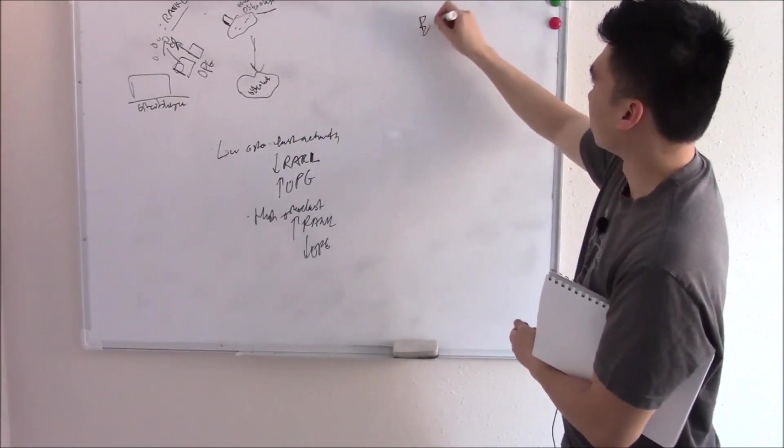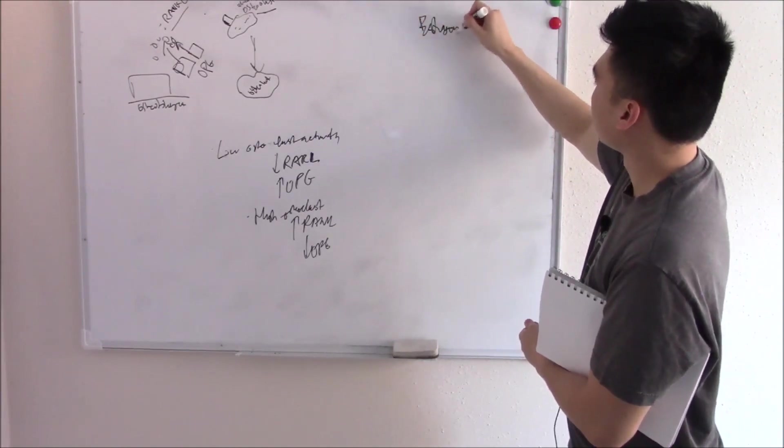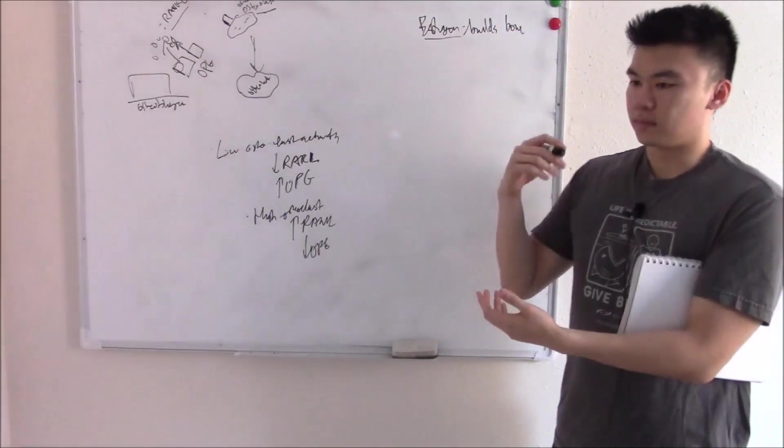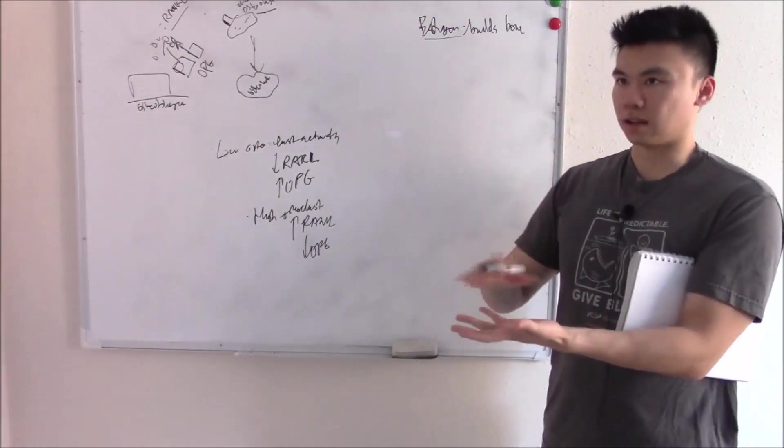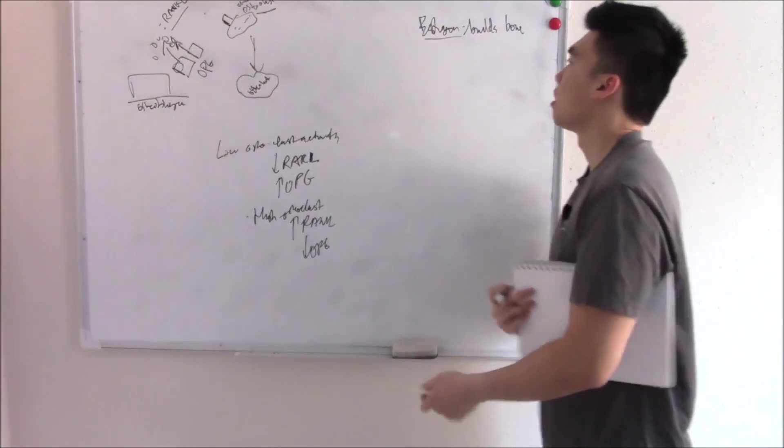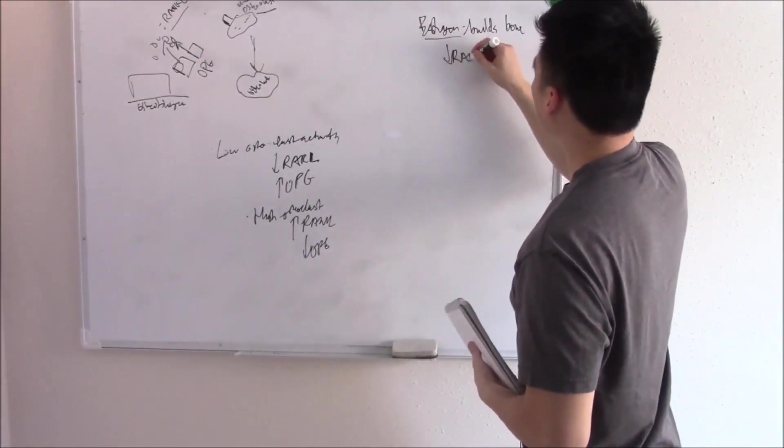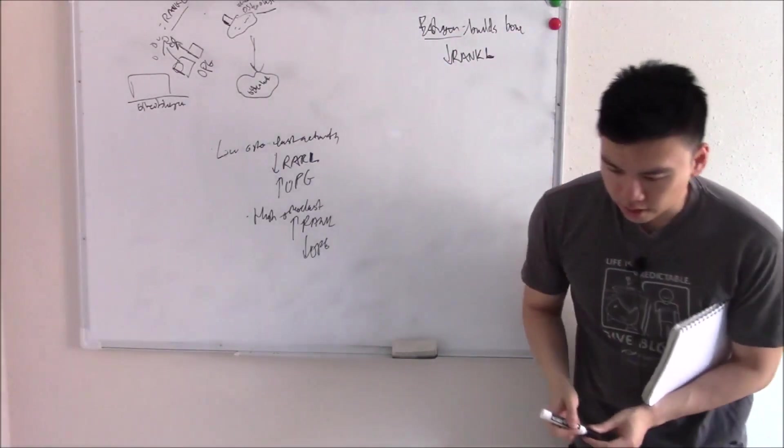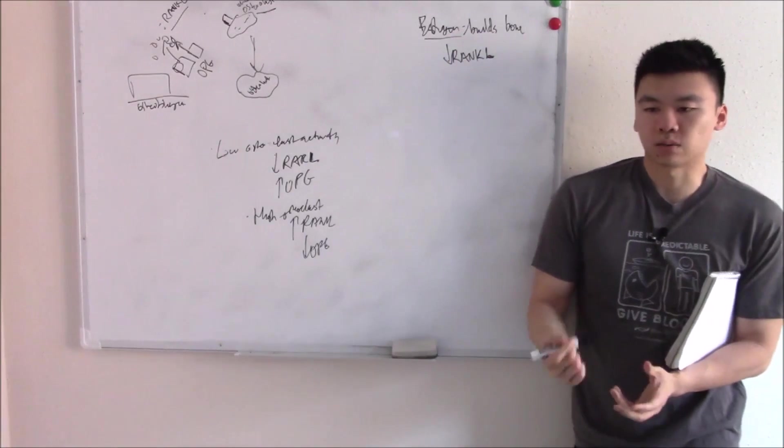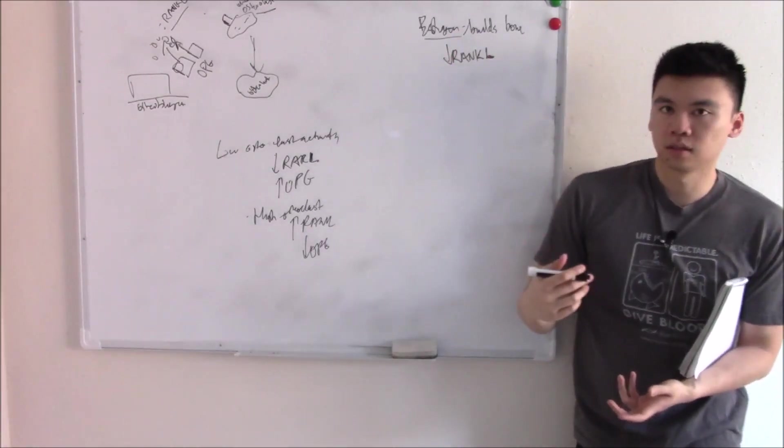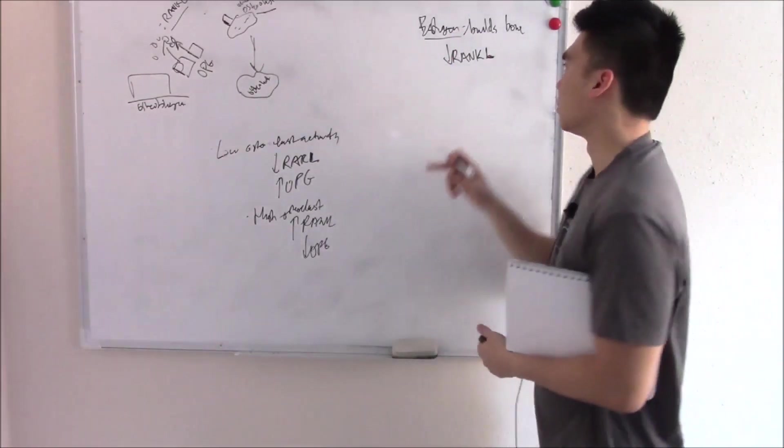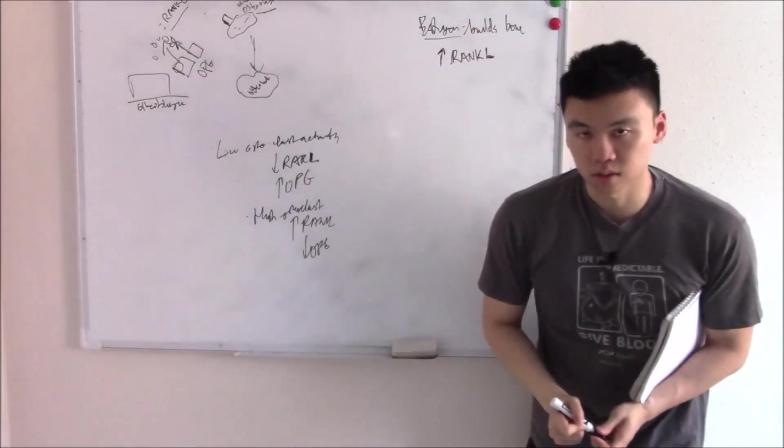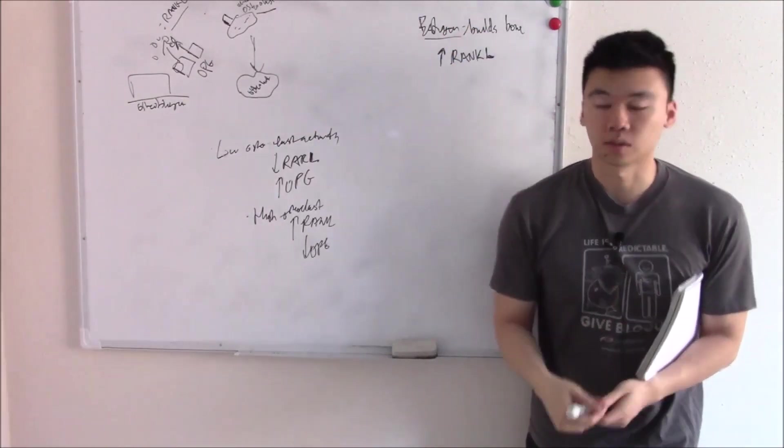Now there are other things that can affect your osteoblast and osteoclast and affect this balance. One of them is estrogen. Estrogen builds bone. It does this by causing apoptosis of your osteoclast, so it lowers bone resorption. It also lowers RANKL, so lowers osteoclast that way. This is why post-menopausal women are at risk of osteoporosis. When their estrogen drops, they no longer have this inhibition. RANKL will rise, osteoclast will no longer apoptose, and you'll have more and more bone resorption and you have osteoporosis.